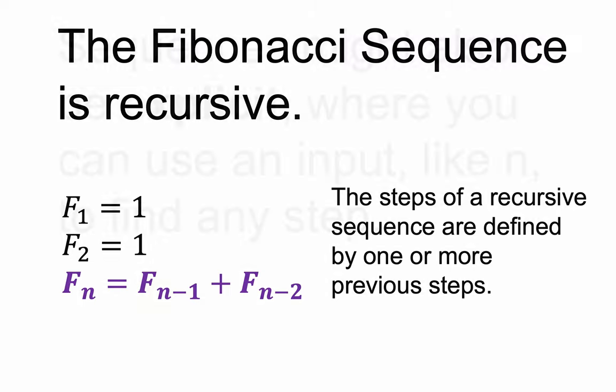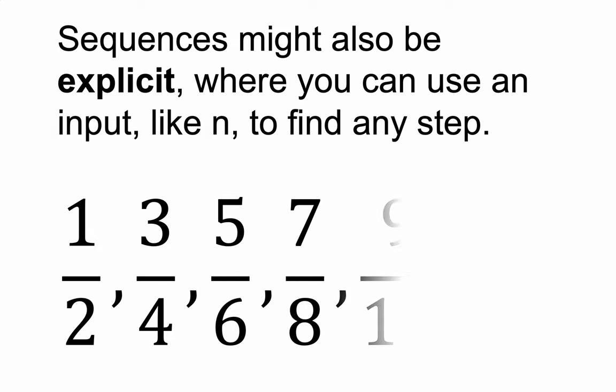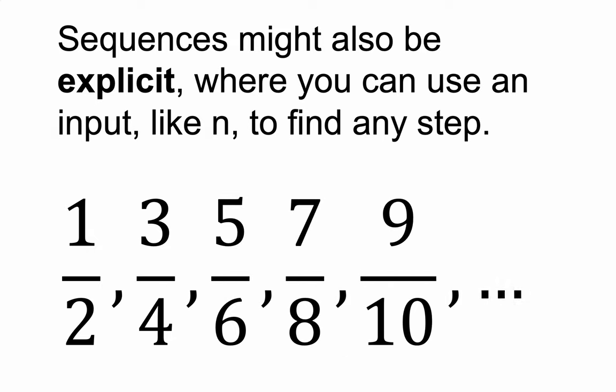With an explicit formula, you can jump ahead and maybe find the 100th step by plugging in a value. So we have all types of sequences. When we look at explicit sequences, you can jump around — you don't need to go step by step. You usually use N or K as input to find a particular step. Here's a sequence I like because it's a series of fractions, and I also like to think of it as a fun arrangement of our counting numbers.